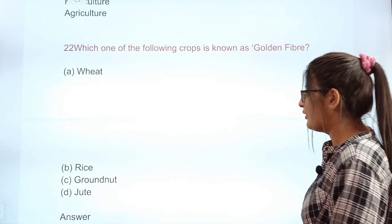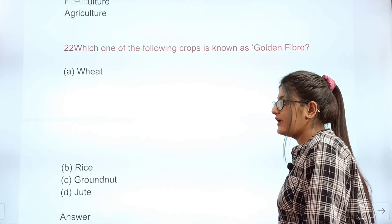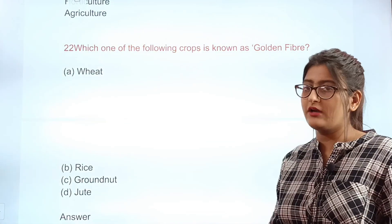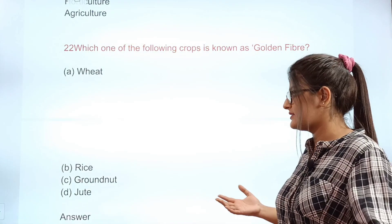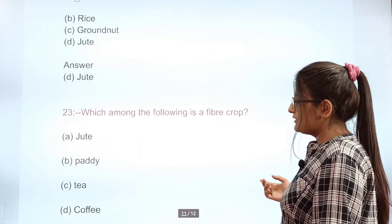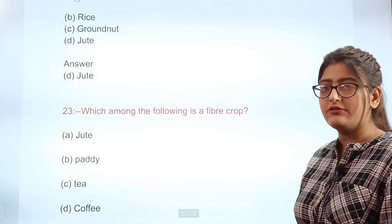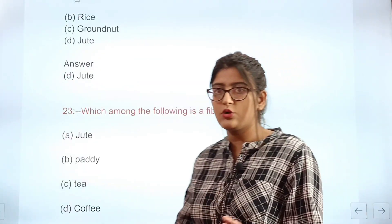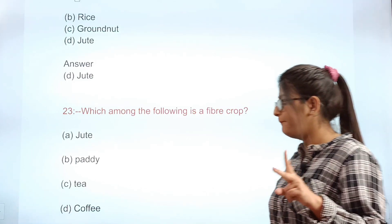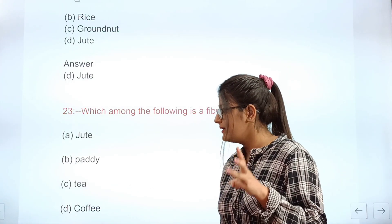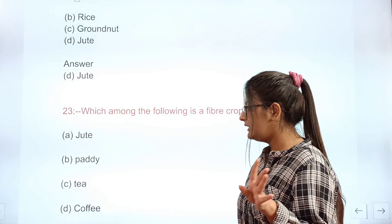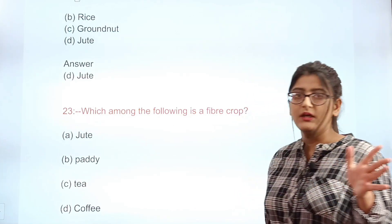Question 22: Which one of the following is known as the golden fiber crop? Options: wheat, rice, groundnut, or jute. The correct answer is D — jute. Question 23: Which one of the following is a fiber crop? Options: A jute, B paddy, C tea, D coffee. The correct answer is A — jute.